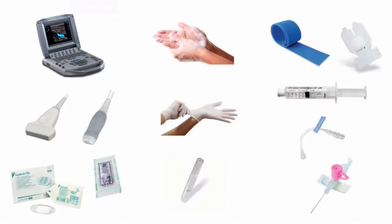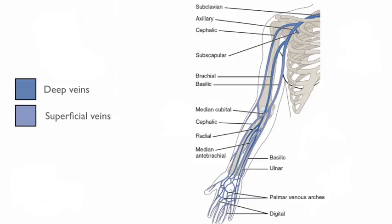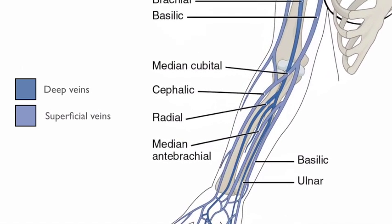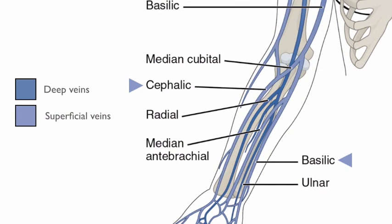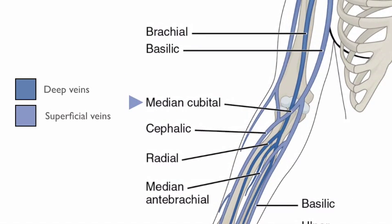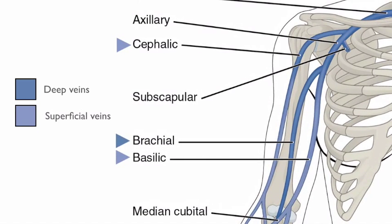Before proceeding with cannulation, we need to identify a suitable vein with ultrasound. In this lecture I will demonstrate the principles on the upper extremity, which is more frequently used, but the same applies to the lower extremity as well. In the forearm and upper arm, we will focus on the cephalic and basilic veins. In the antecubital fossa, we will look for the median cubital vein connecting the two. It is also possible to access the brachial vein in the upper arm; however, it lies deeper and is adjacent to the artery, so it is not ideal for IV access.